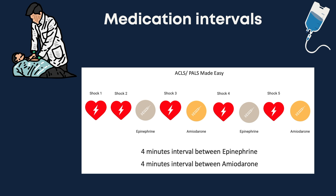Defibrillate number 5 give amiodarone, then defibrillate number 6 and give epinephrine again. I always remember that after even-numbered shocks — shock 2, 4, 6 — the patient will receive an epi, and after odd-numbered shocks — shock 3 and 5 — the patient will receive amiodarone, assuming the rhythm did not change. Following this pattern, the patient will receive one dose of epinephrine every 4 minutes and one dose of amiodarone every 4 minutes, consistent with the AHA guideline interval of every 3 to 5 minutes.